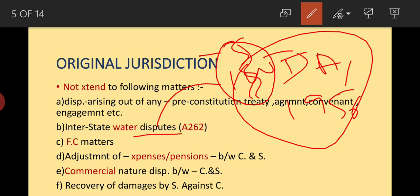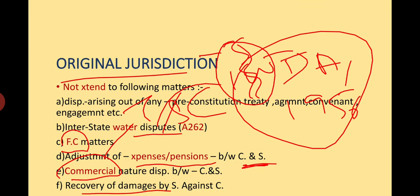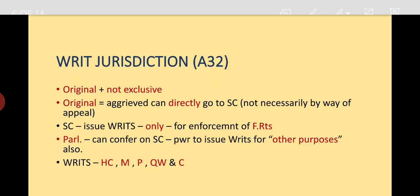Other excluded matters include Finance Commission-related matters, adjustment of expenses or pensions between Centre and state, commercial/trade and commerce disputes, and recovery of damages by a state against the Centre — these do not fall under this jurisdiction.